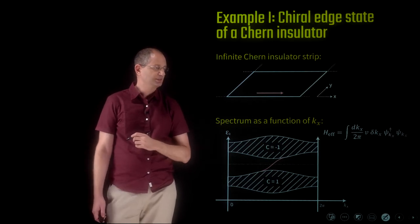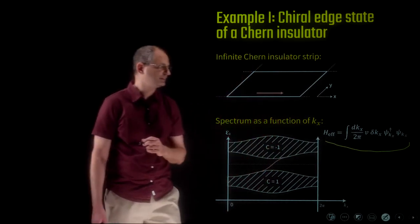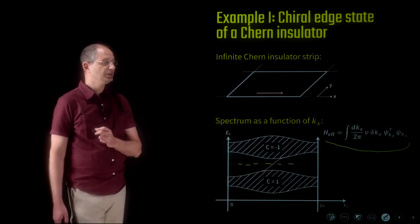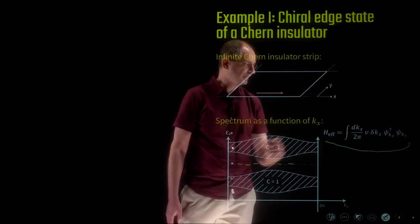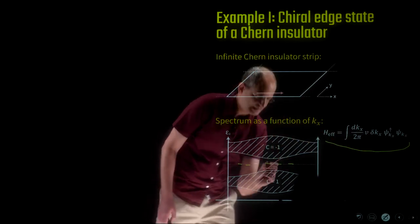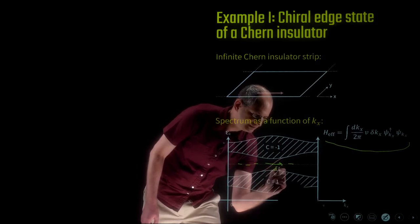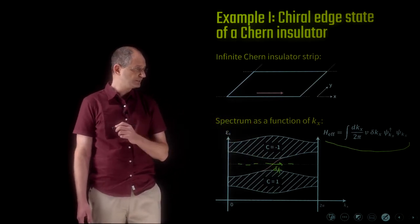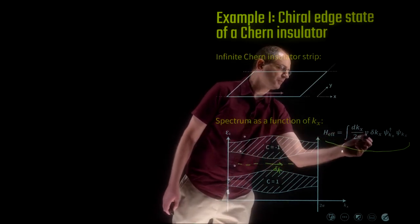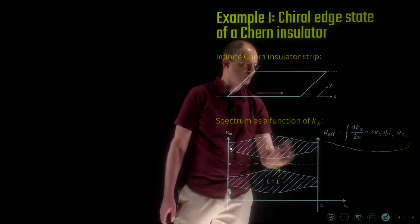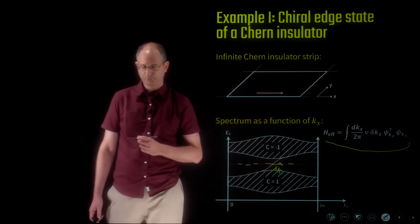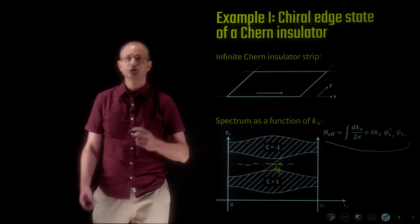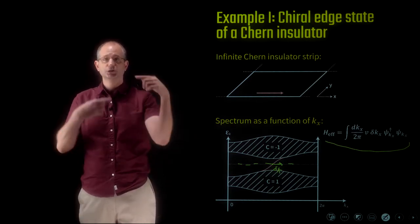Now we argue that such a chiral edge state, focusing on one of the two edges, is an example of an anomalous edge state — it can never appear in a standalone one-dimensional system. It can only appear if it has a partner moving in the opposite direction; on a strip, that partner simply appears at the other edge. Here is the anomalous edge theory: the effective low-energy Hamiltonian for states close to the Fermi level at zero energy. It's a one-dimensional Hamiltonian, an integral over kx, where δkx is the distance in k relative to where the edge state crosses zero energy. The Hamiltonian is simply v δkx ψ†(k) ψ(k), where v is the group velocity.